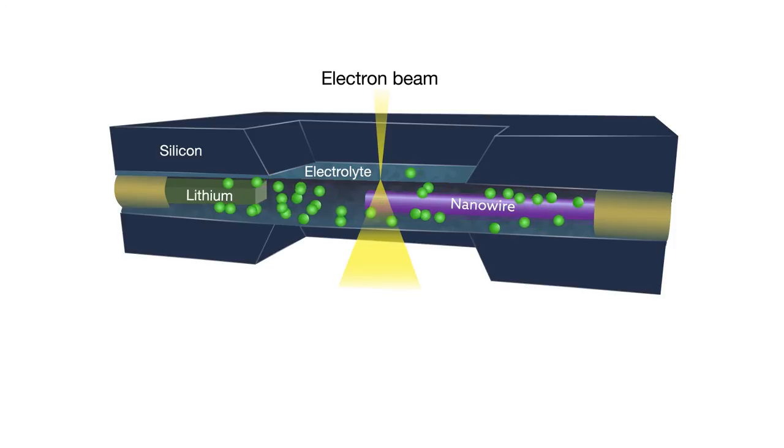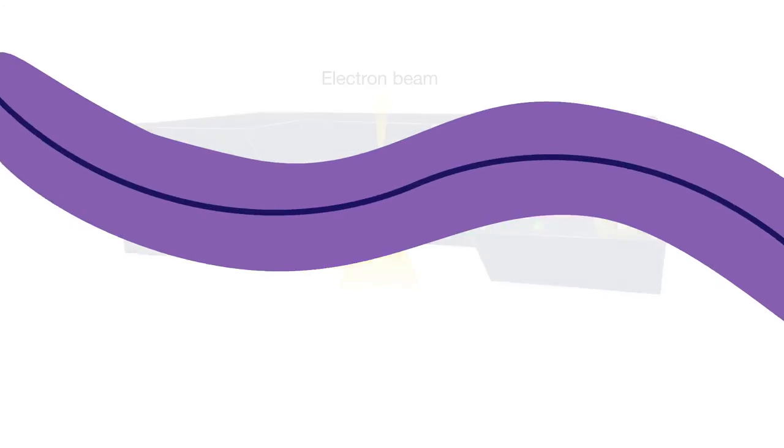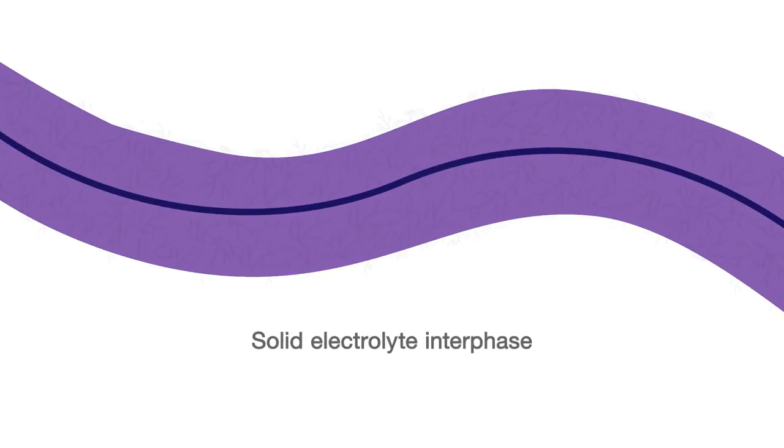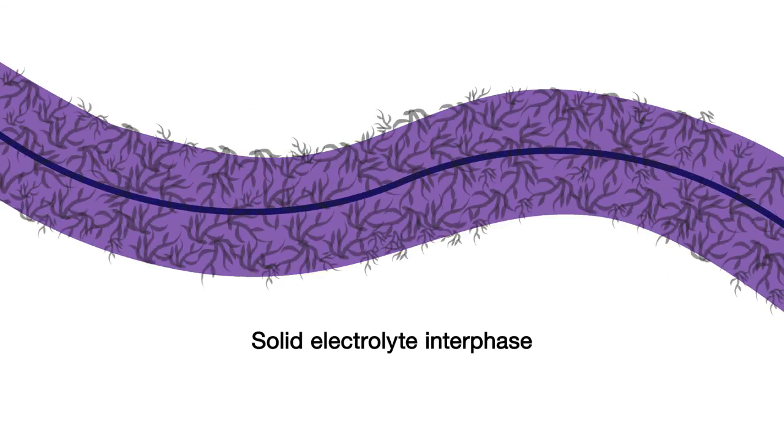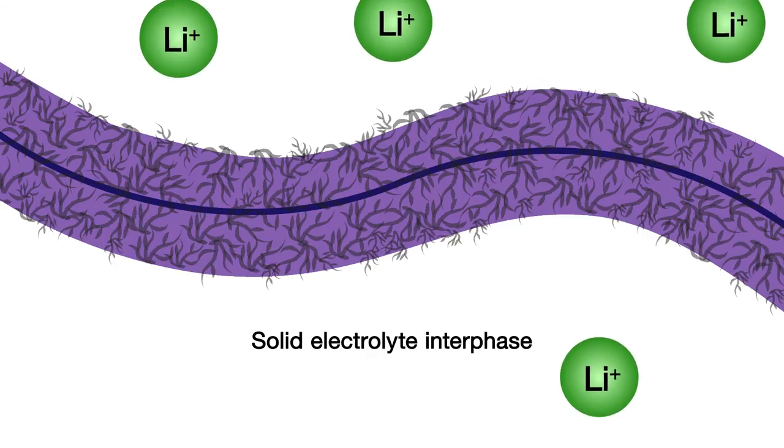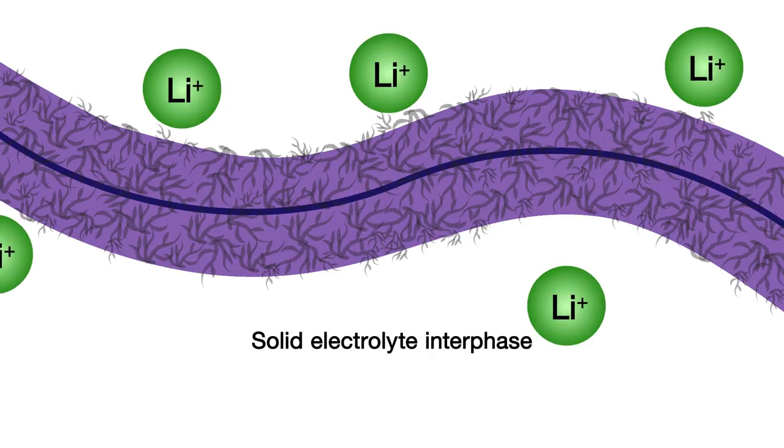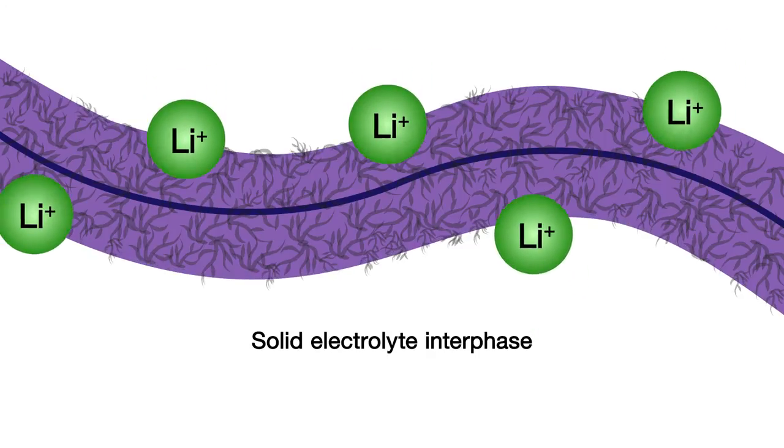This type of cell has allowed scientists to better understand one fundamental battery process in particular, the formation of the solid-electrolyte interface. This layer between the electrolyte and the electrode plays a major role in how lithium ions move into and out of an electrode and ultimately affect battery life and performance.